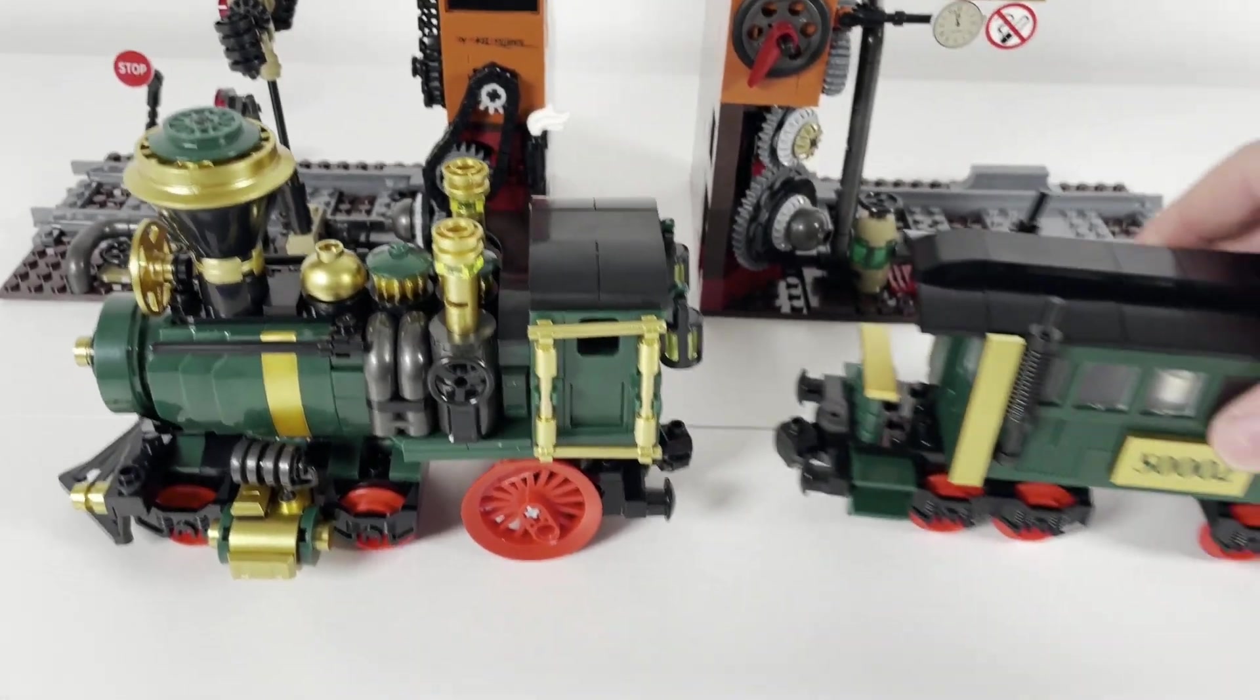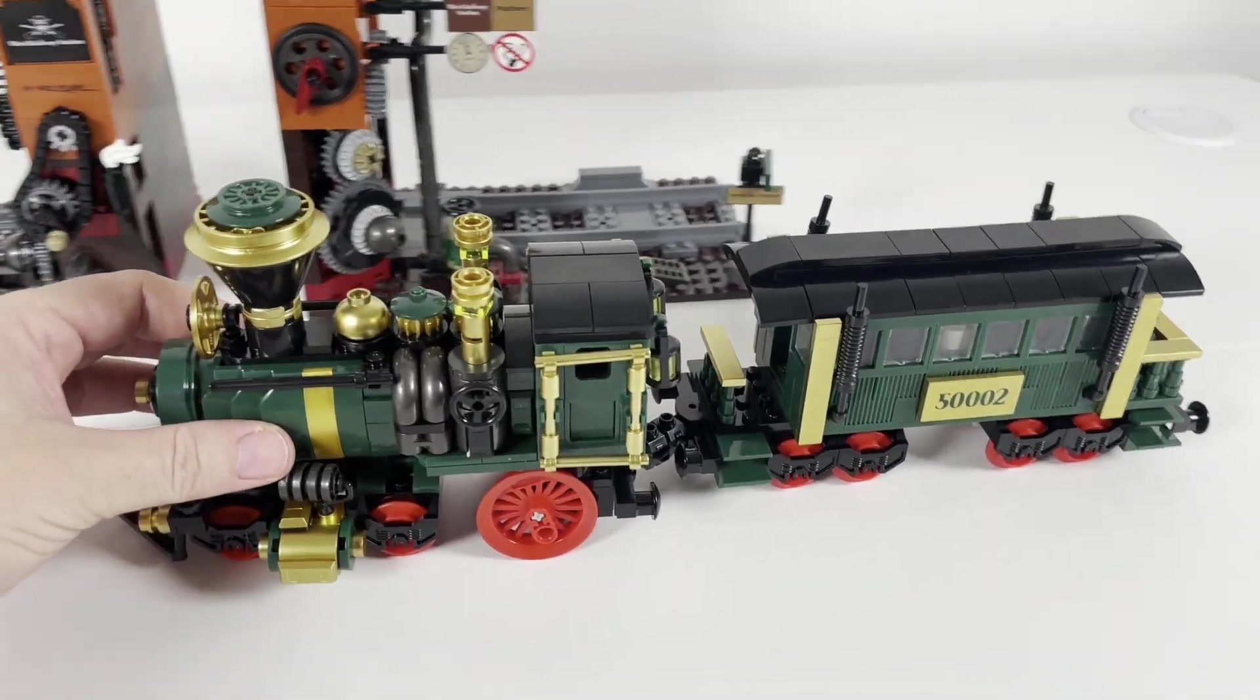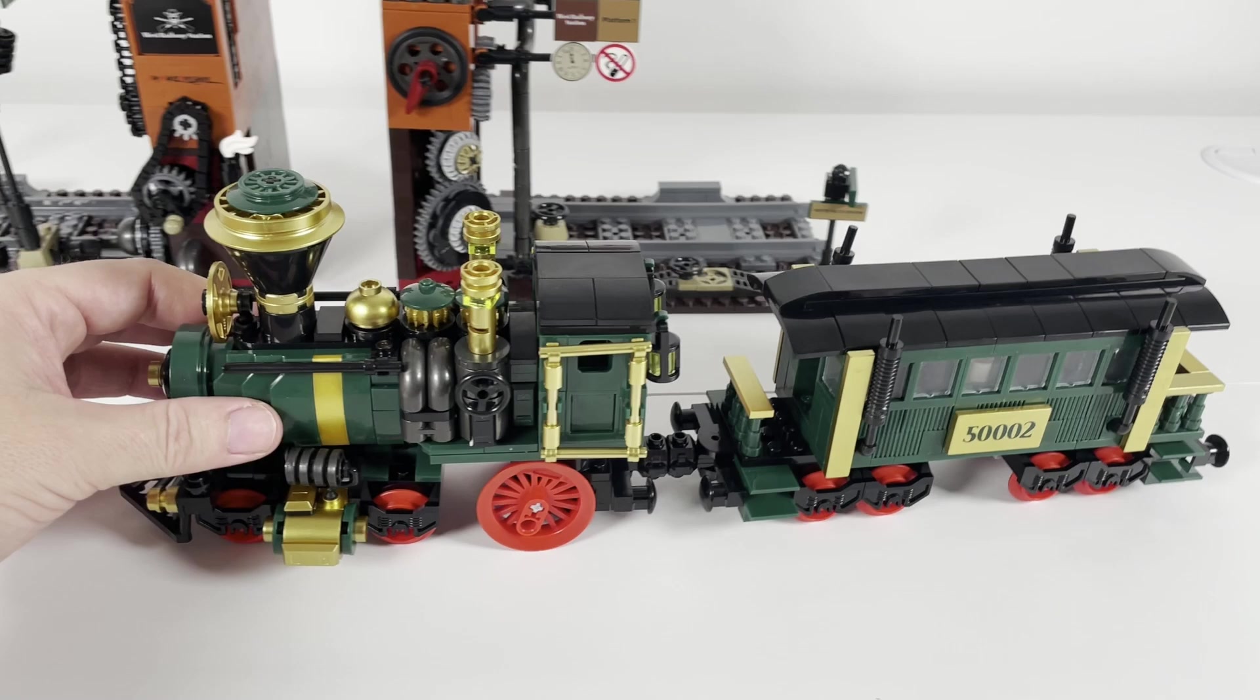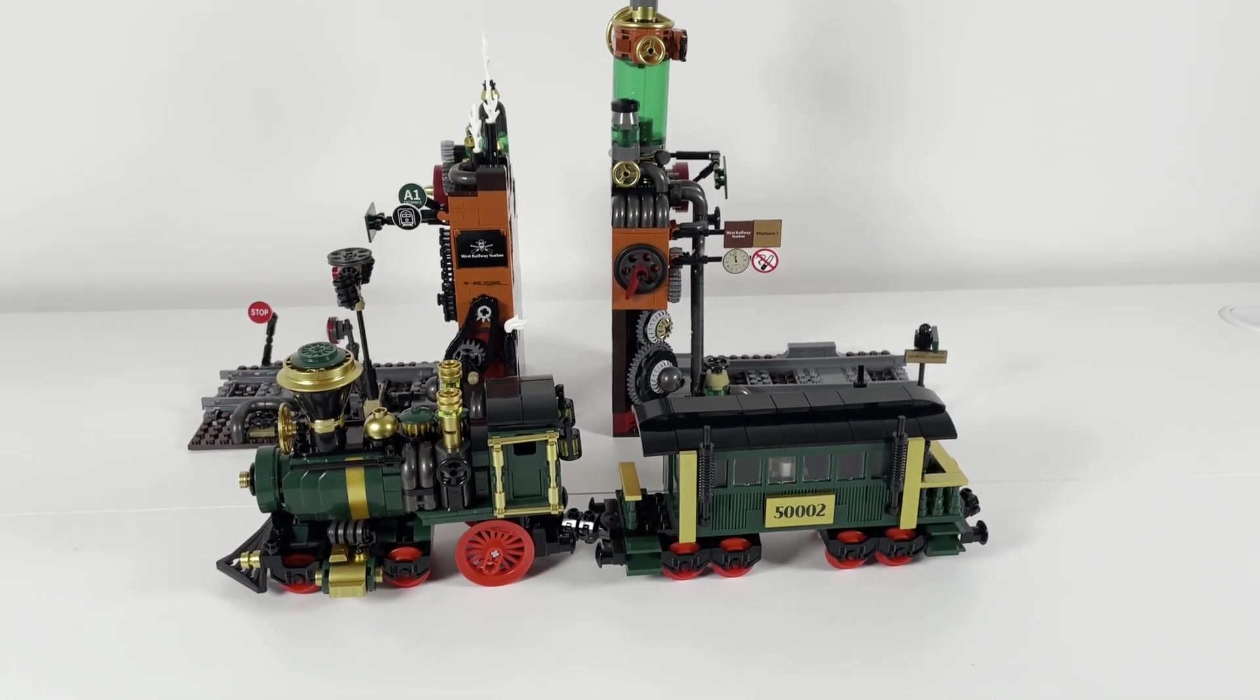Something really cool is that you can remove the steam train and the wagon. Both have magnets and you can combine them. The wagon has magnets on both sides, so that you can add more wagons if you have some. The train is designed to be placed on any tracks. It has the standard width for stud trains.